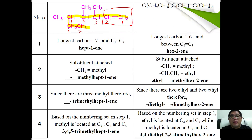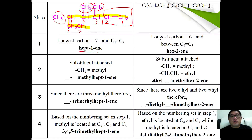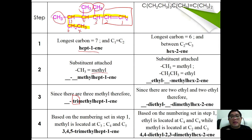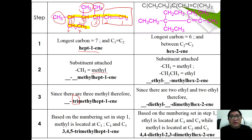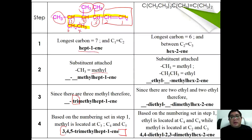With this, we name the parent chain as hept-1-ene. In step two, we identify the alkyl groups: we have a methyl here, a methyl here, and a methyl here — only one type of substituent, so no need to arrange alphabetically. In step three, three similar methyls gives the prefix tri-methyl. Based on the earlier numbering, the methyls are at carbons three, four, and five, so the full name is 3,4,5-trimethylhept-1-ene.